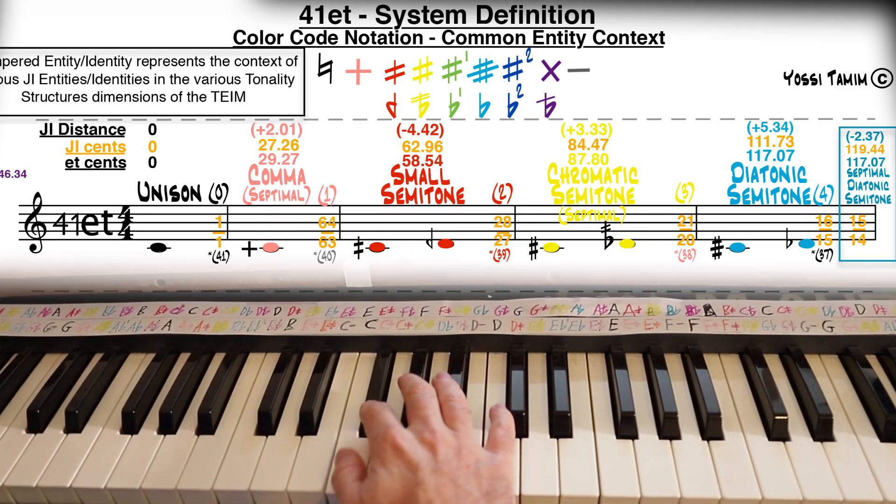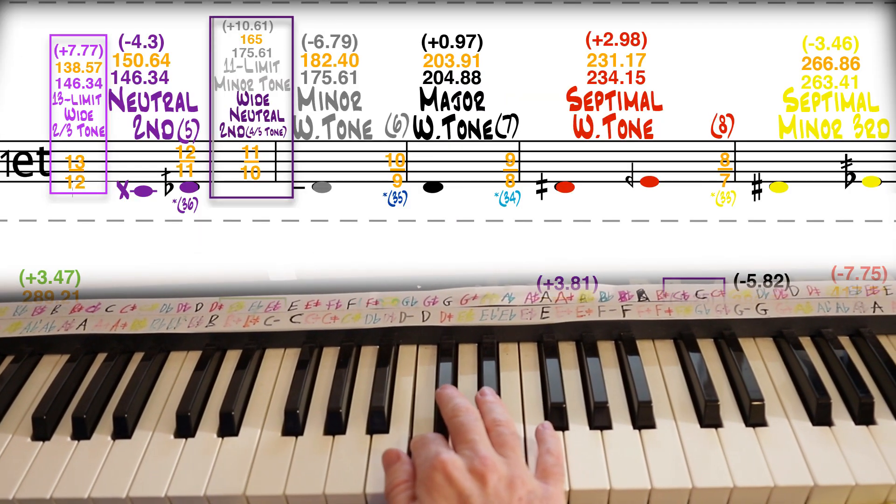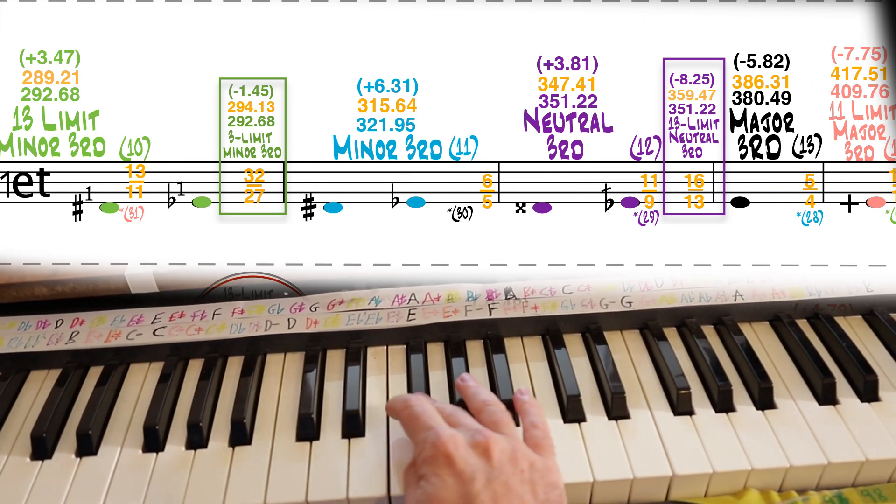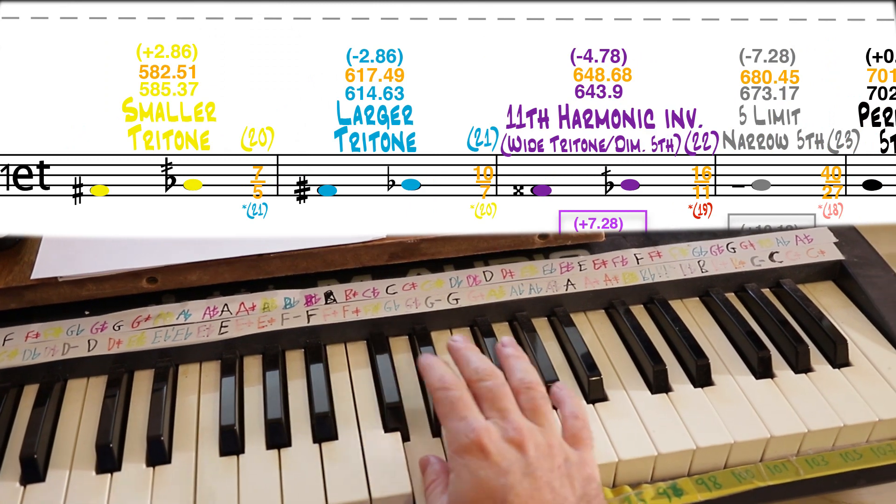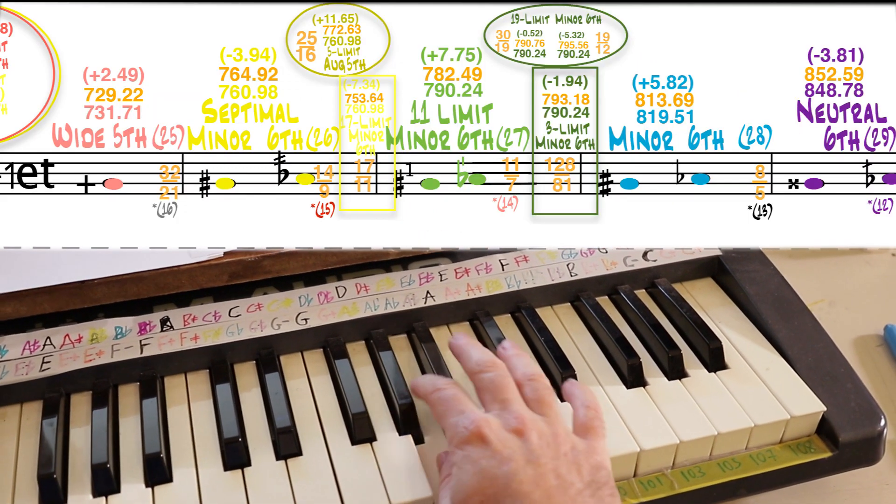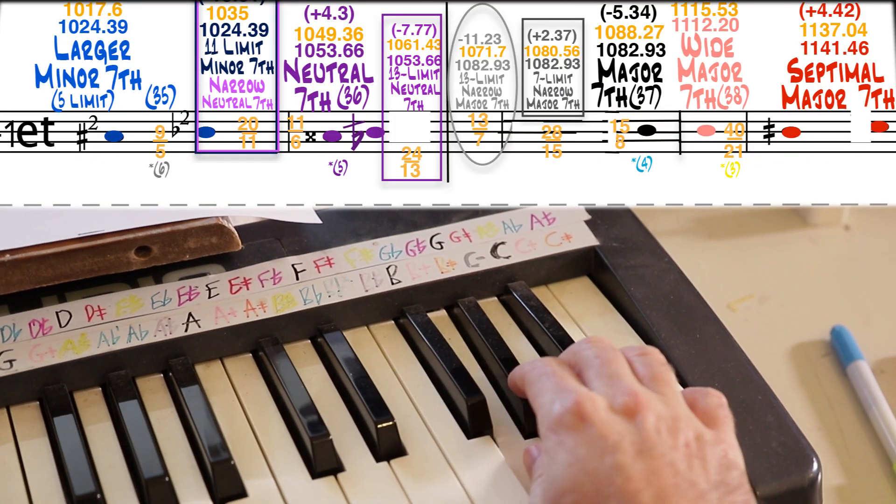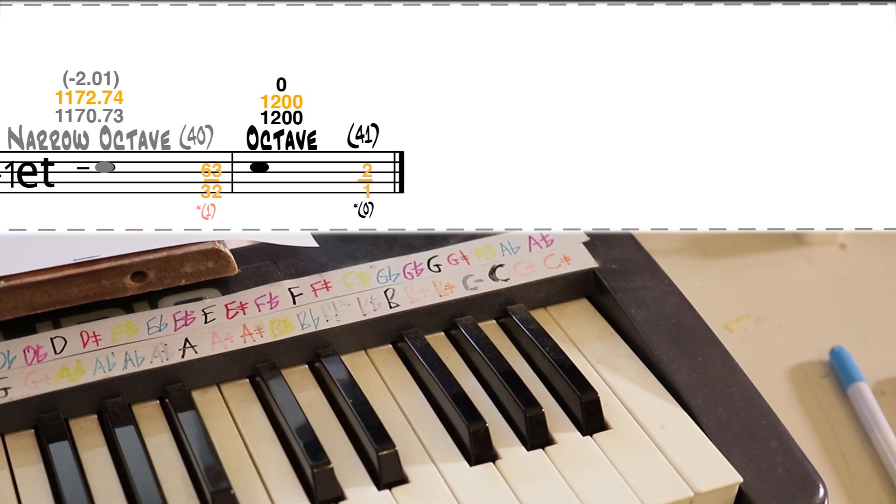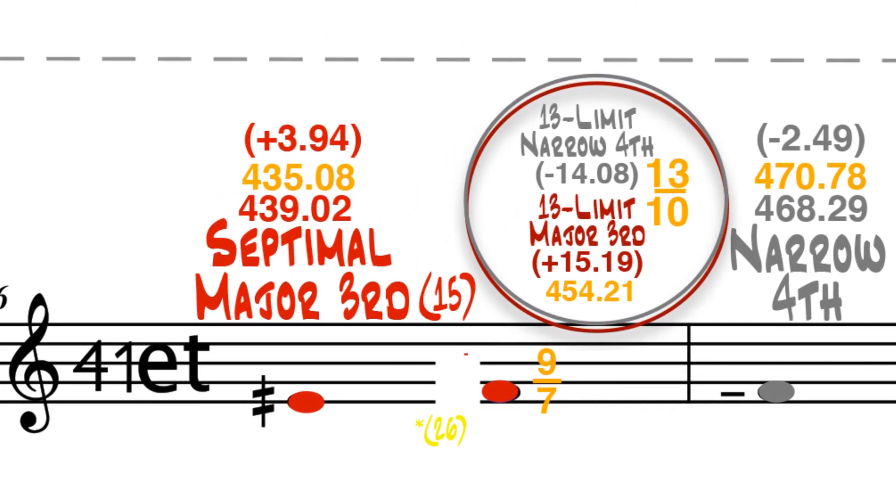Here is some explanation about the 41 note system. Every note in that system has a unique harmonic context. For example, an E-sharp red. It's located between the major 3rd and the 4th.